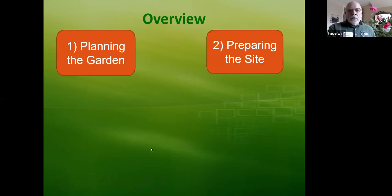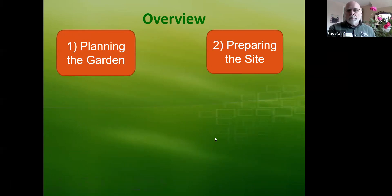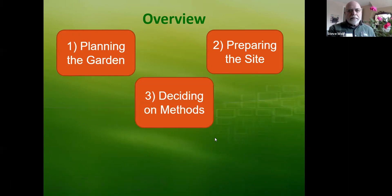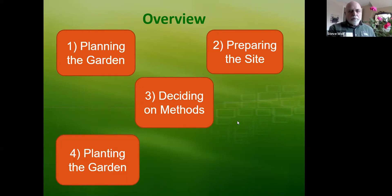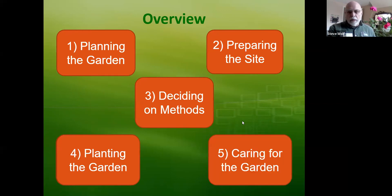As an overview, these are the topics we're going to talk about briefly: planning the garden, preparing your site, deciding on methods. You have to have a plan and decide how you're going to do it before you start. Then planting the actual garden, and caring for the garden — maintaining it and harvesting it.